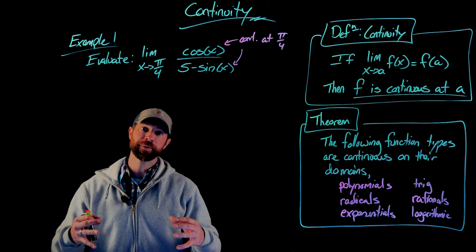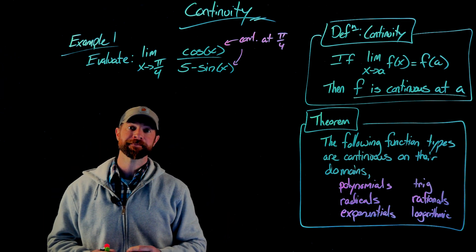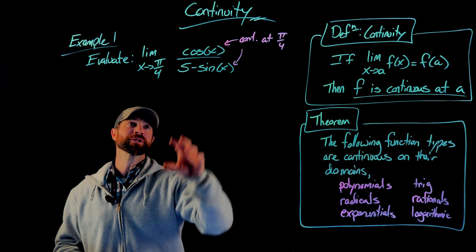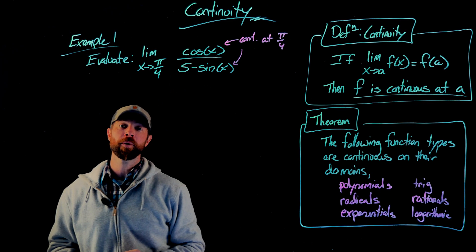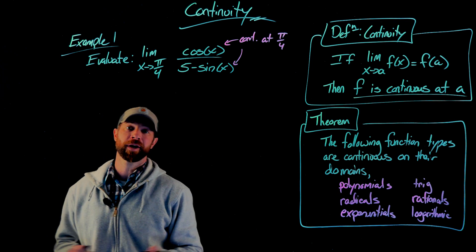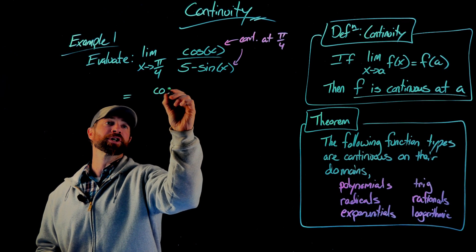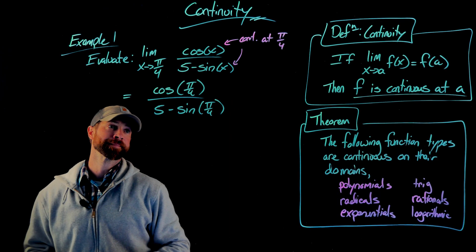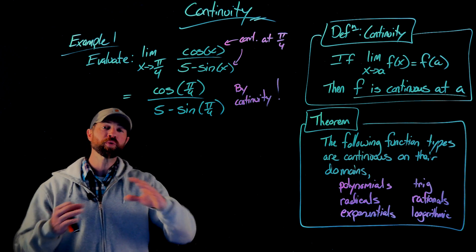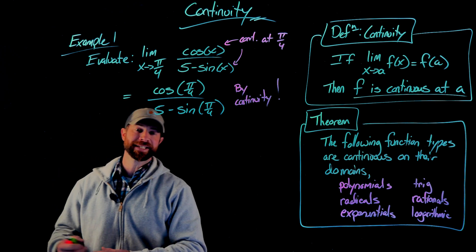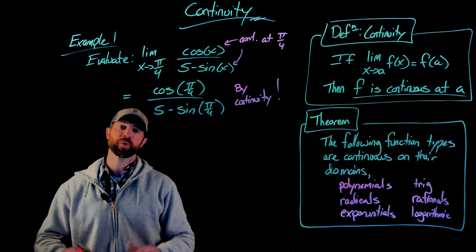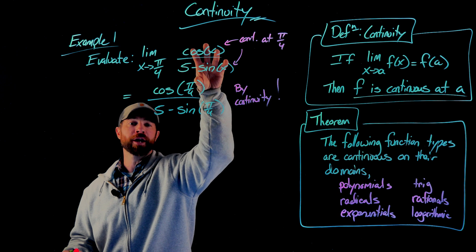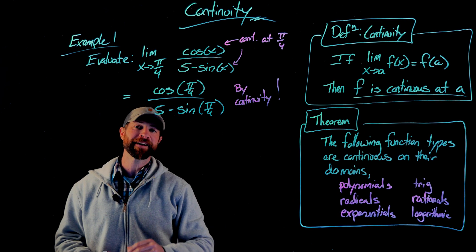By continuity, we can say that the limit of this function is equal to the function being evaluated at pi over 4. In other words, just using an argument of continuity, this limit is equal to the cosine of pi over 4, over 5 minus sine of pi over 4. If you've been working hard on evaluating limits, this is a really big deal and very freeing. We don't have to go through the steps of using limit laws or piecing together direct substitution — with continuity, we simply plug in pi over 4.